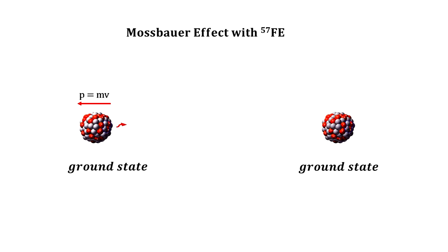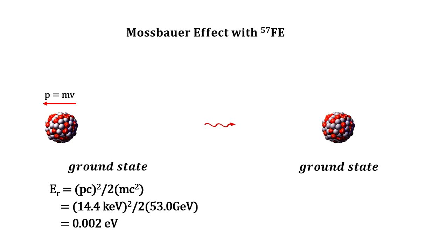The problem is that when the gamma ray is ejected, the nucleus recoils. Because of energy momentum conservation, the recoiling energy reduces the energy of the gamma ray. The gamma ray is no longer a match for the other nuclei, and it moves right through. There is no absorption.